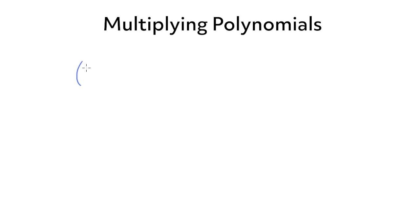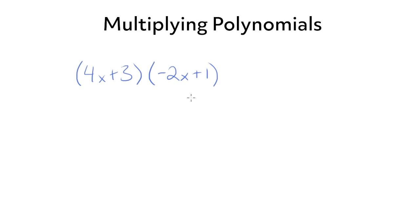Hey guys, today I'm going to walk you through a few different ways to multiply polynomials. First we're going to take a look at multiplying binomials by each other. So a binomial might be something like 4x plus 3 times negative 2x plus 1. This is an example of multiplying binomials by each other.